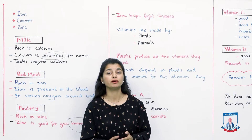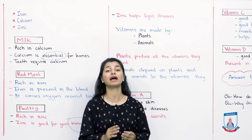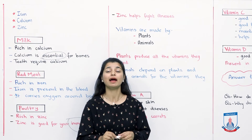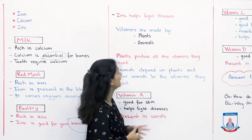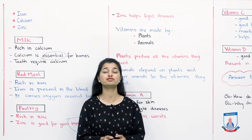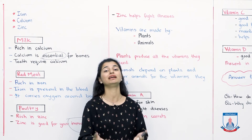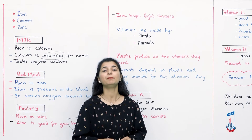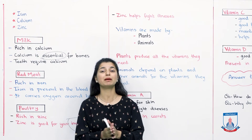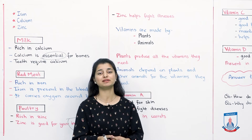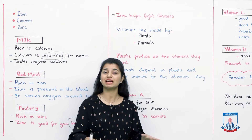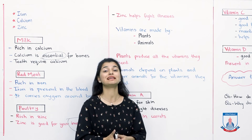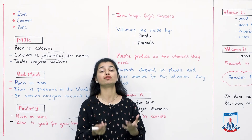So we have talked about calcium, zinc, and iron, and which different food items contain them and why our body needs them. Zinc helps fight illnesses — we get it from poultry. Now we will talk about vitamins. We have discussed three examples of minerals, but obviously there are many minerals our body needs. Now we are talking about vitamins, which are also very essential for our growth and survival.